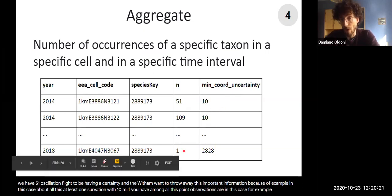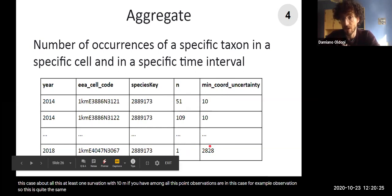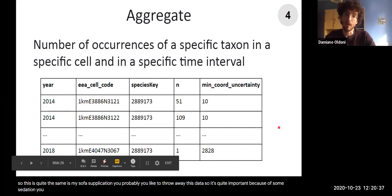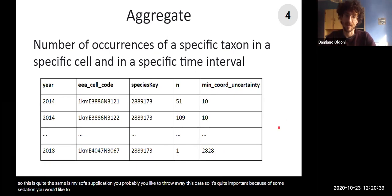In this case, for example, you have one observation. So this is quite the same. So you have one observation. The minimum coordinate uncertainty is quite high. So for some applications, you probably would like to throw away this data. So this is quite important because for some observations, you would like to have precise data. But for some other applications, we are not so much concerned about the uncertainty.